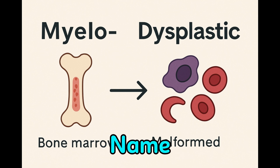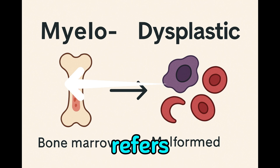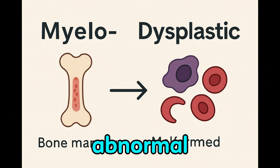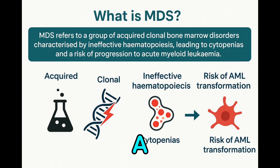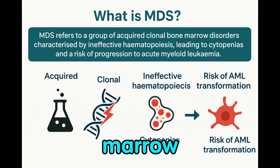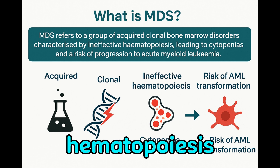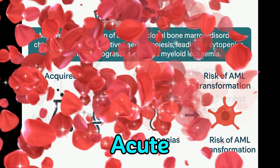Let's begin by breaking down the name itself: myelodysplastic syndromes. Myelo refers to the bone marrow, which is the site of blood cell formation. Dysplastic means abnormal development or maturation. So MDS are a group of disorders where the bone marrow produces blood cells abnormally — they are poorly formed and often die early. MDS refers to a group of acquired clonal bone marrow disorders characterized by ineffective hematopoiesis, leading to cytopenias and a risk of progression to acute myeloid leukemia.